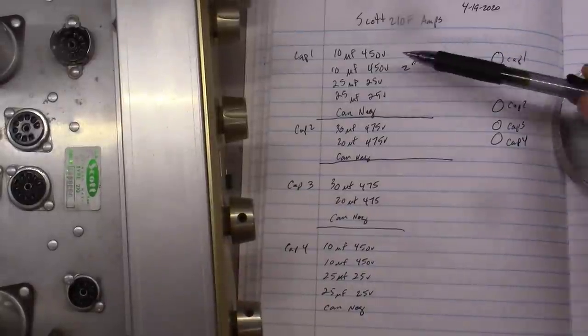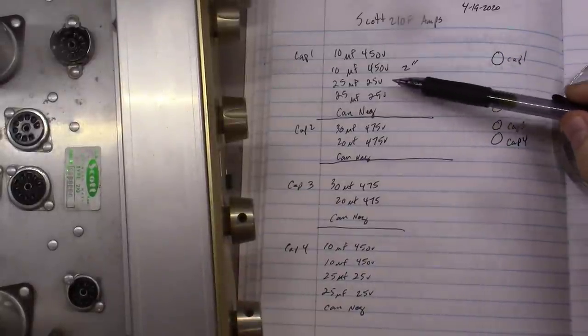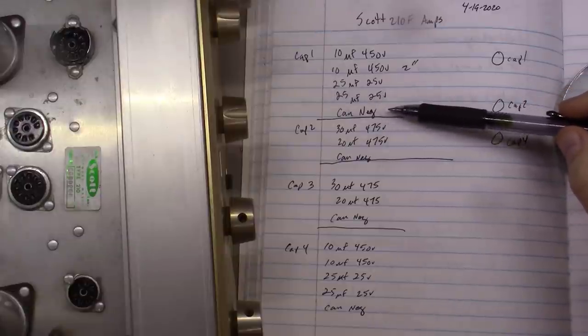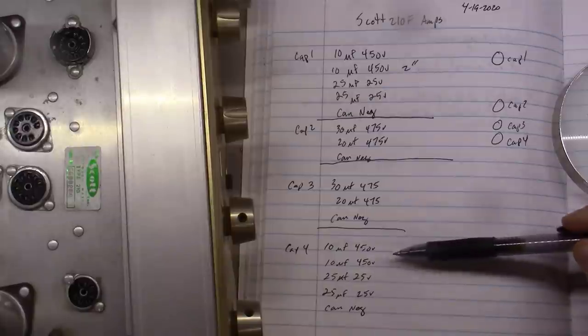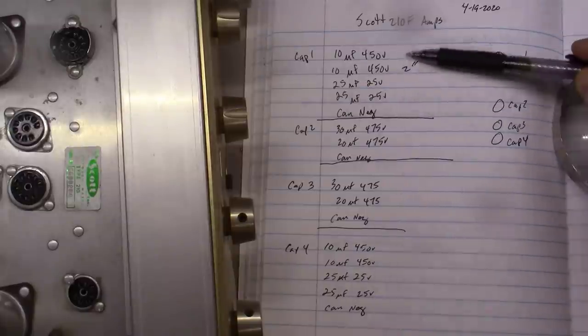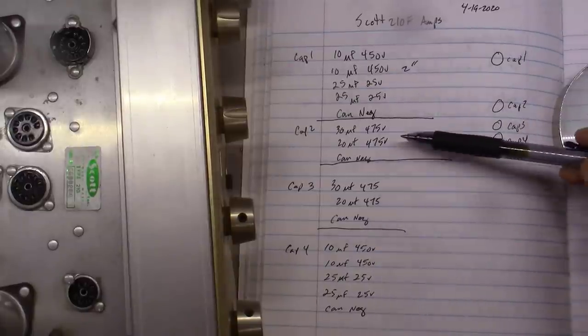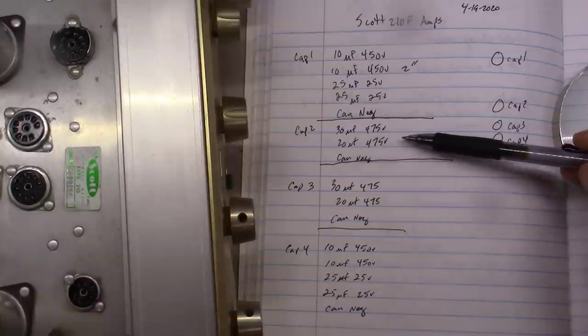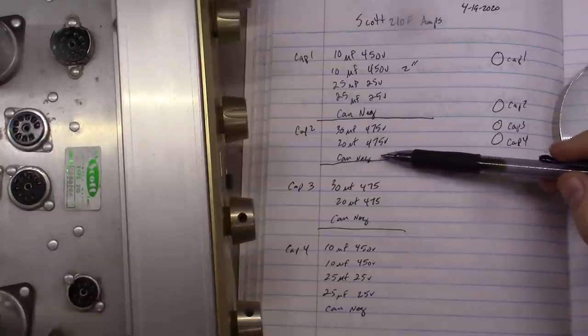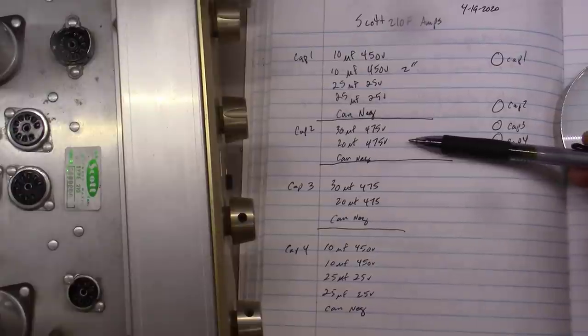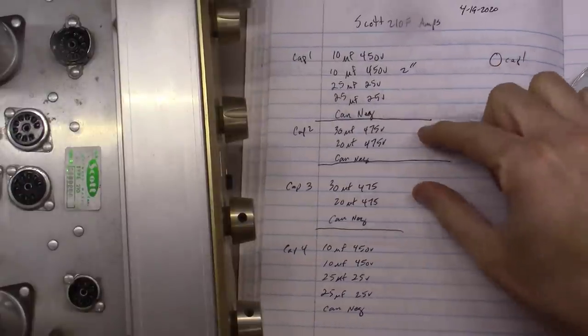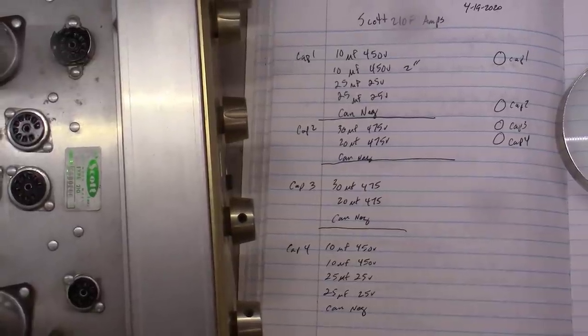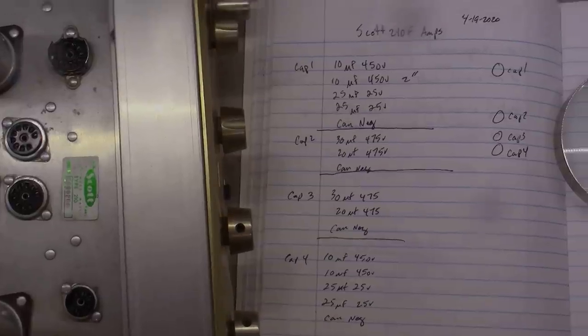And as you can see here, 10, 10 at 450, 25 at 25 and 25 at 25. Notice the can is negative on this here. The cap four is exactly like cap one. Cap two here, 30 at 475 and 20 at 475 and the can is negative. And cap three is just like cap number two. So really I need two of these, two of these to put this unit back in order from an electrolytic standpoint.